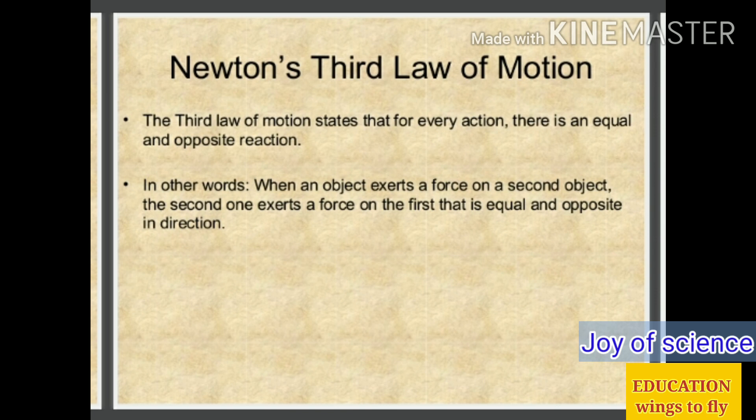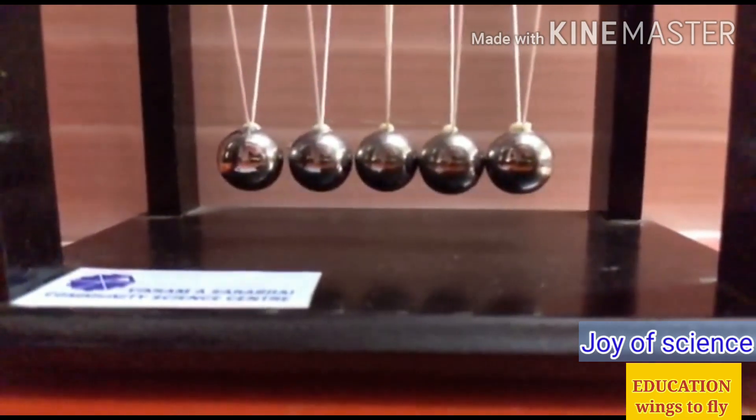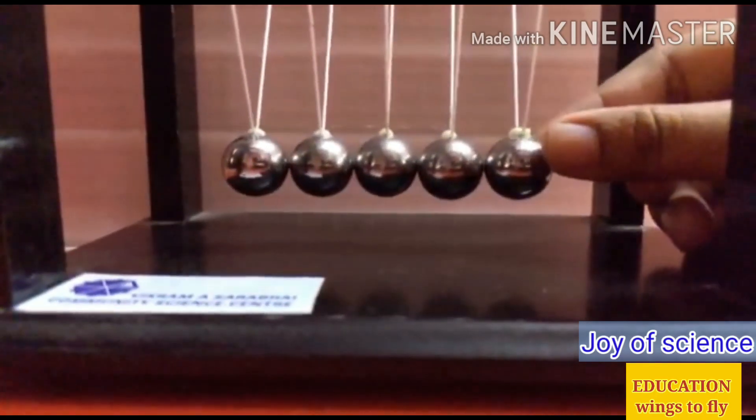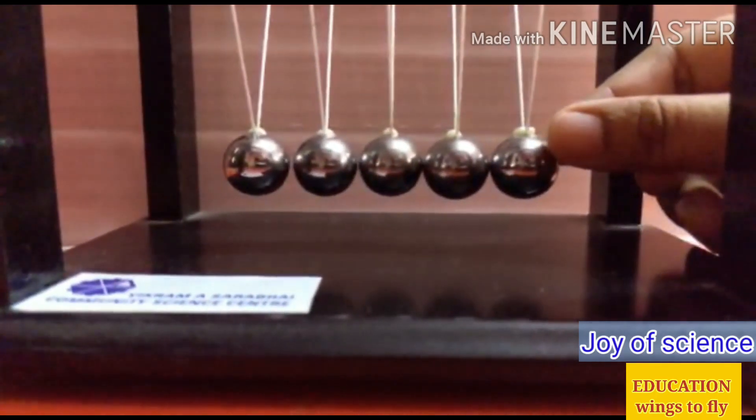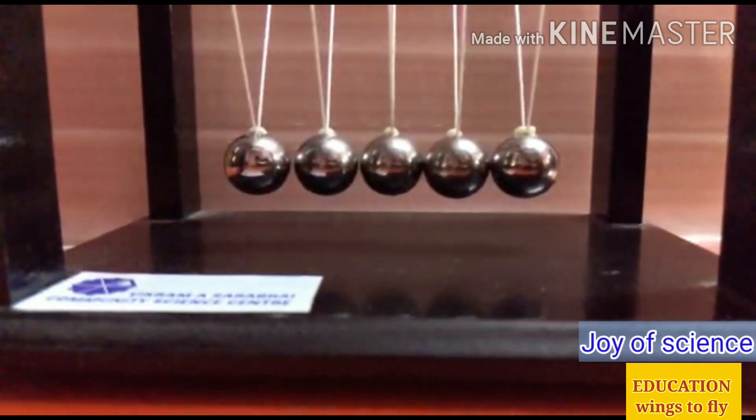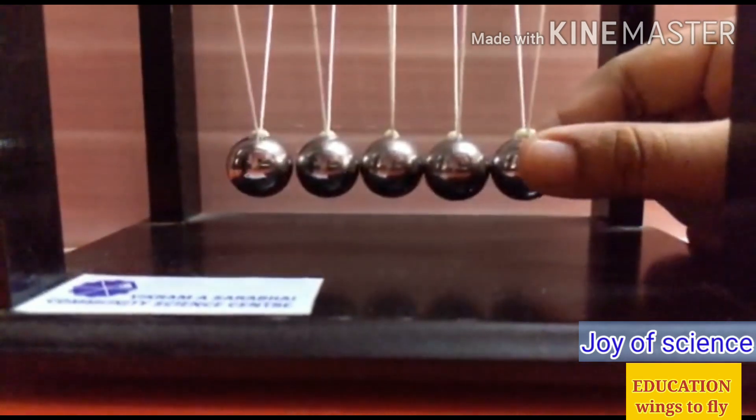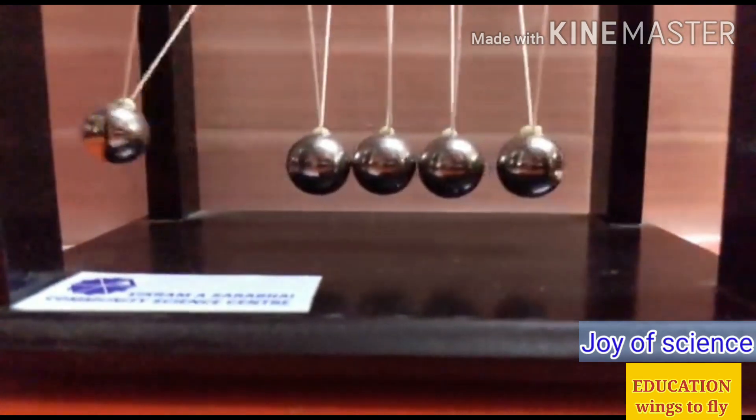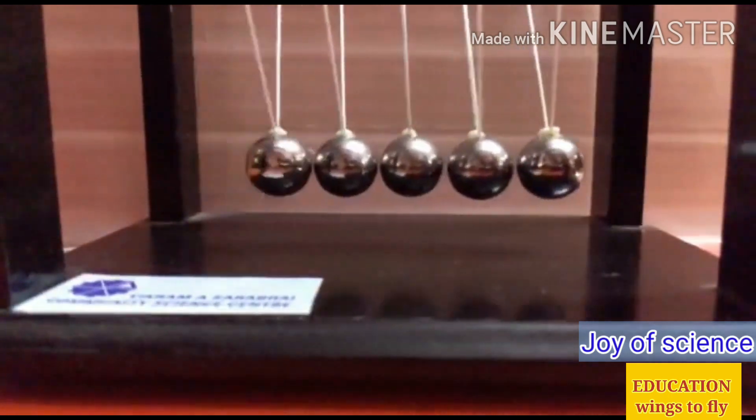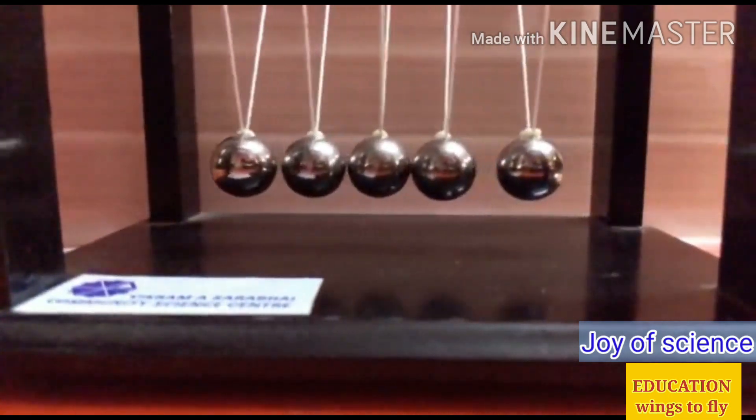So with the help of Newton's cradle, I am going to explain what is the meaning of this law. Now here you can see a beautiful device called the Newton's cradle. What will happen if I take one ball from the right-hand side and pull it out and release it? Only one ball from the left-hand side will come out.